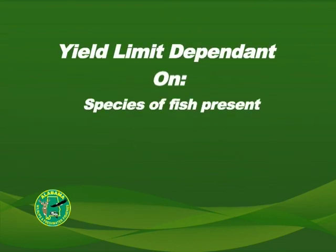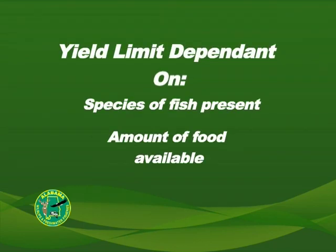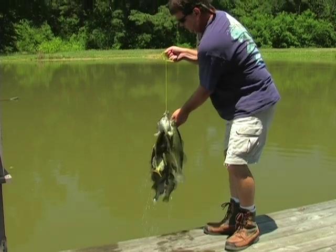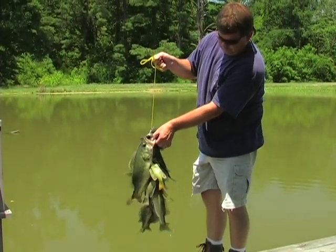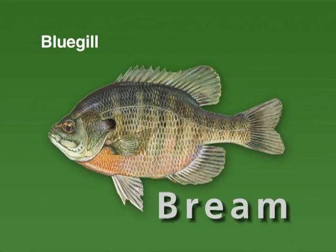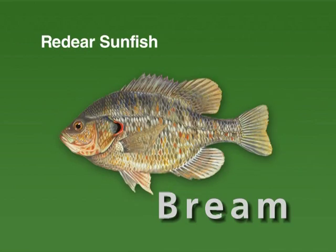The yield limit is dependent on the species of fish present, the amount of food available to the fish, the rate of harvest, and other factors. Yield limit, as used in this video, refers to the harvest of bream and largemouth bass since this stocking combination is normally used in Alabama.